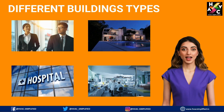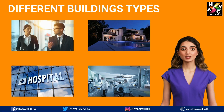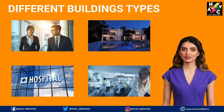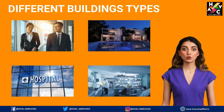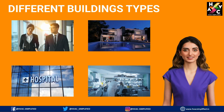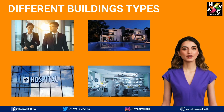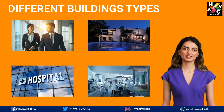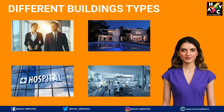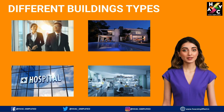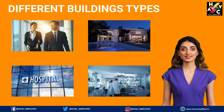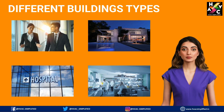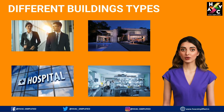Air changes per hour is especially important in spaces with strict air quality requirements, like hospitals, labs or industrial facilities. Residential and commercial buildings have different ACPH recommendations based on their function. For example, a typical office might need four to six air changes per hour, while a hospital operating room could require 15 or more.